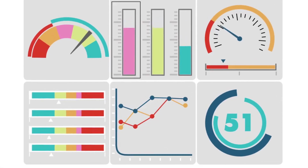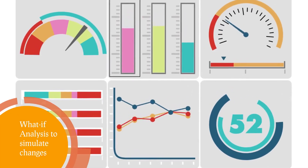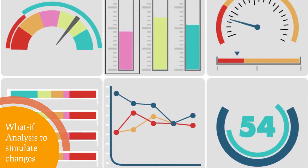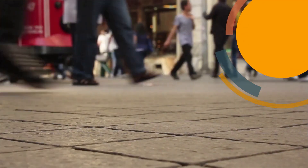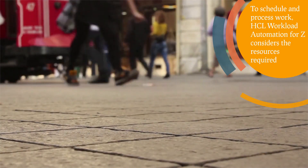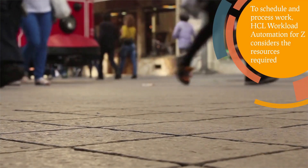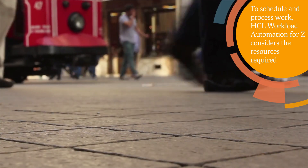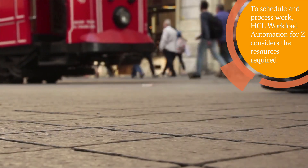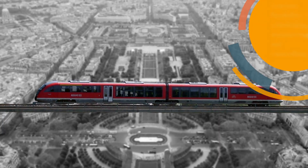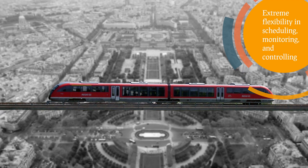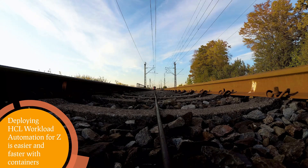With the what-if analysis tool, you can simulate changes to your activities and analyze the impact on your environment. When scheduling and processing work, HCL Workload Automation for Z considers the human or machine resources needed for each operation. This gives you the flexibility to schedule, monitor, and control any type of activity.